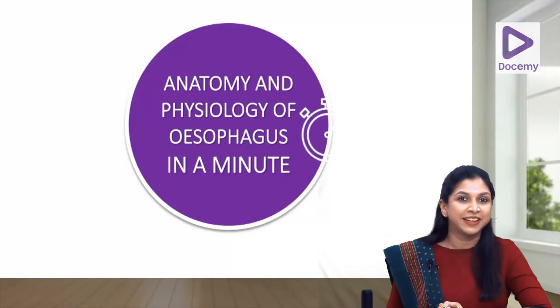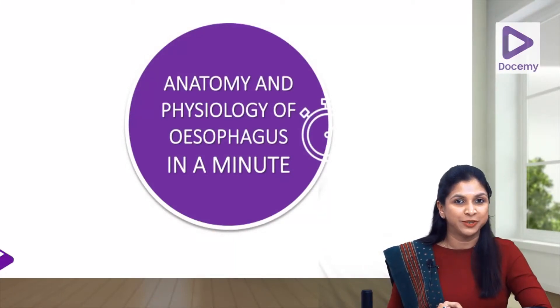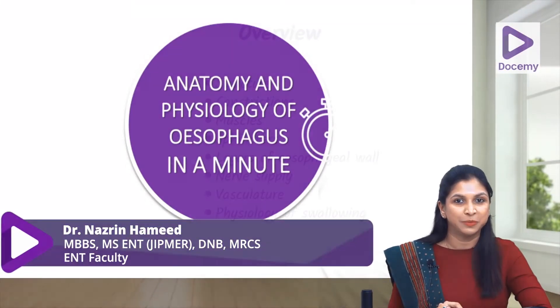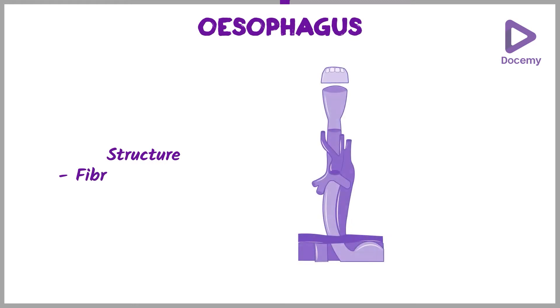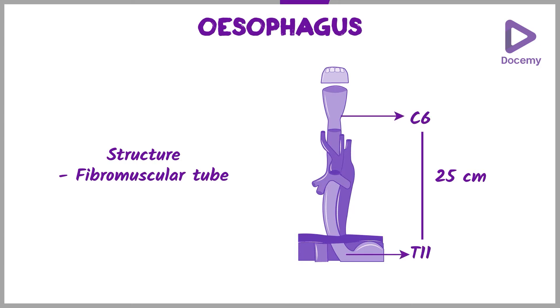Let's learn about the anatomy and physiology of the esophagus in a minute. The esophagus is a fibromuscular tube, 25 cm long, and extends from C6 to T11.